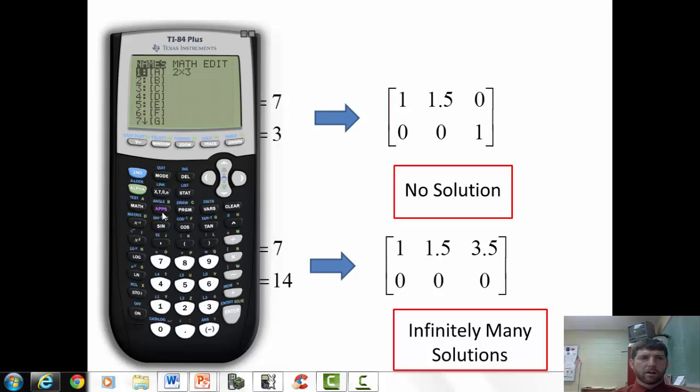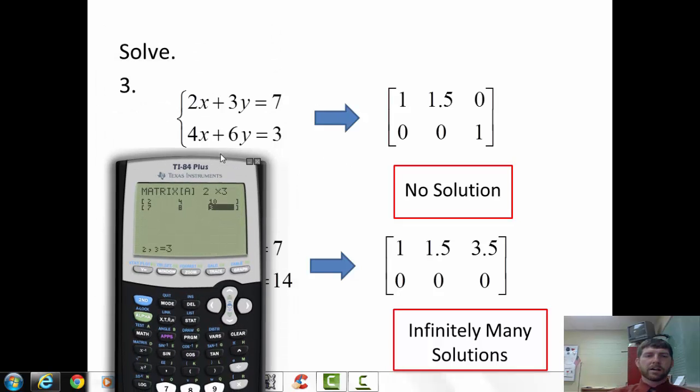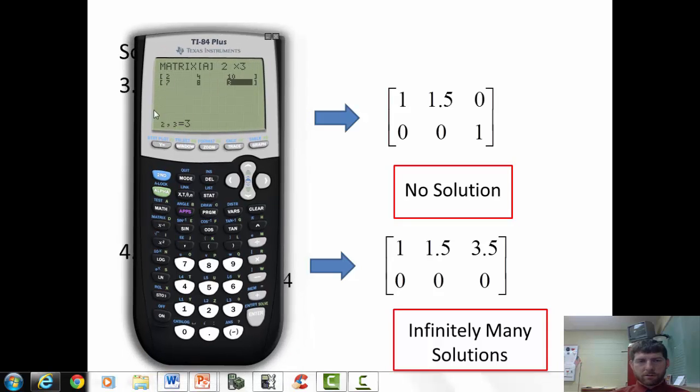So these are the special cases that come out that cause you to not have an answer. Let me show you a quick one of what the 2 by 3 should look like when it has an answer. So if we just make up some numbers, 2, 4, 10, 7, 8, and 3. It doesn't matter. Because remember, the solution that we're talking about is each of these is a line. And the solution is where the lines cross. So these lines will cross somewhere because they have different slopes. So second quit, second matrix math, RREF, second matrix A. So see how we get the 1, 1 for this diagonal and 0 for the other spots?